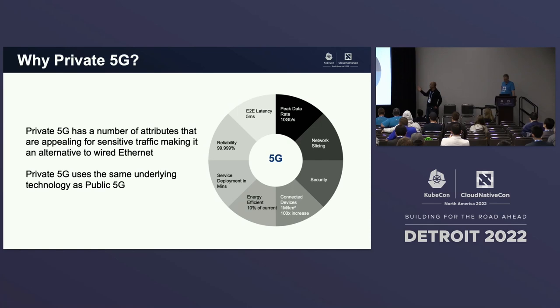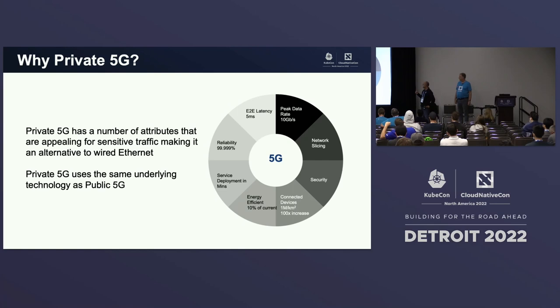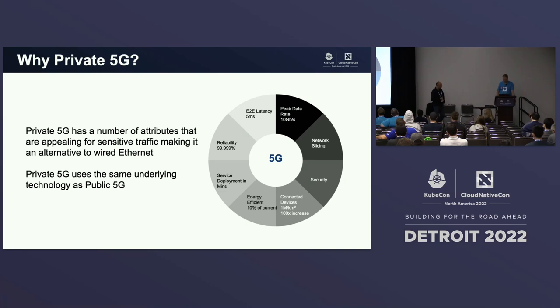Just some of the key points: faster data rates, ultra-reliable low latency — that's another key feature of 5G, giving end-to-end latency of 5 milliseconds or below with 99.5% reliability. It's all software-driven so you can deploy 5G in minutes. Energy efficient with technologies like beamforming — down to 10% of current usage. Support for IoT with a million devices per square kilometer, a 100x increase. It's more secure, and there's network slicing so you can put multiple workloads on the same private 5G network.